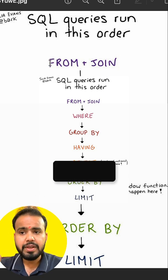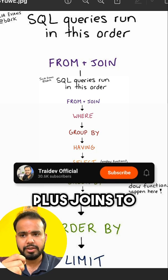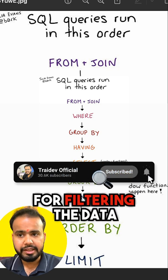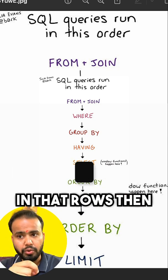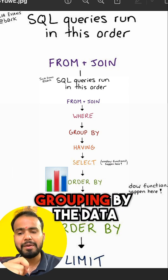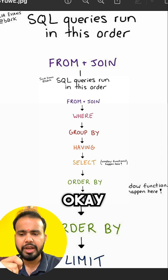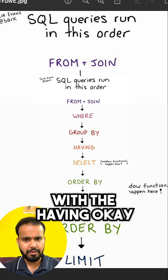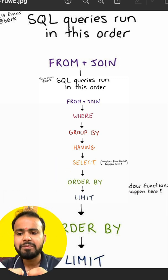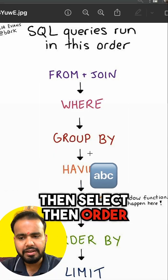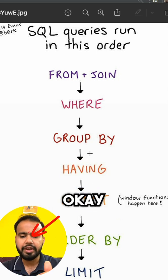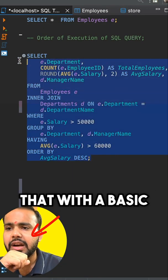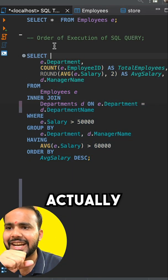The actual execution order starts with FROM, then JOINs to the table, then WHERE for filtering the rows, then GROUP BY the data, then HAVING to filter the grouped data, then SELECT, then ORDER BY, and finally LIMIT.